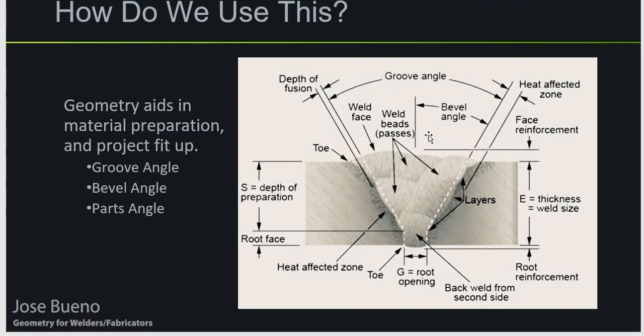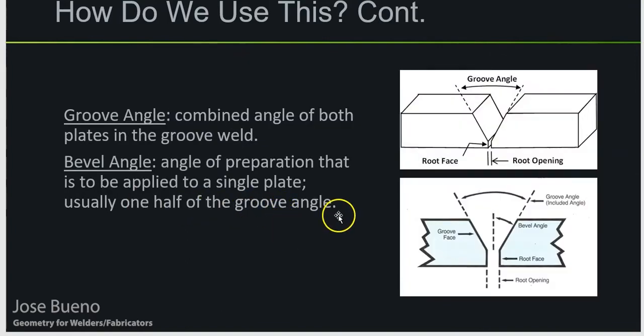When we're talking about squareness or 90-degree angles, think of a perfect T-joint. Now, what happens if you're supposed to do a T-joint but that vertical plate is supposed to be joined to the base plate at a certain angle? This is where we need to take all this into consideration and really remember just the basics of geometry. Let's move on to the next slide and keep it easy.